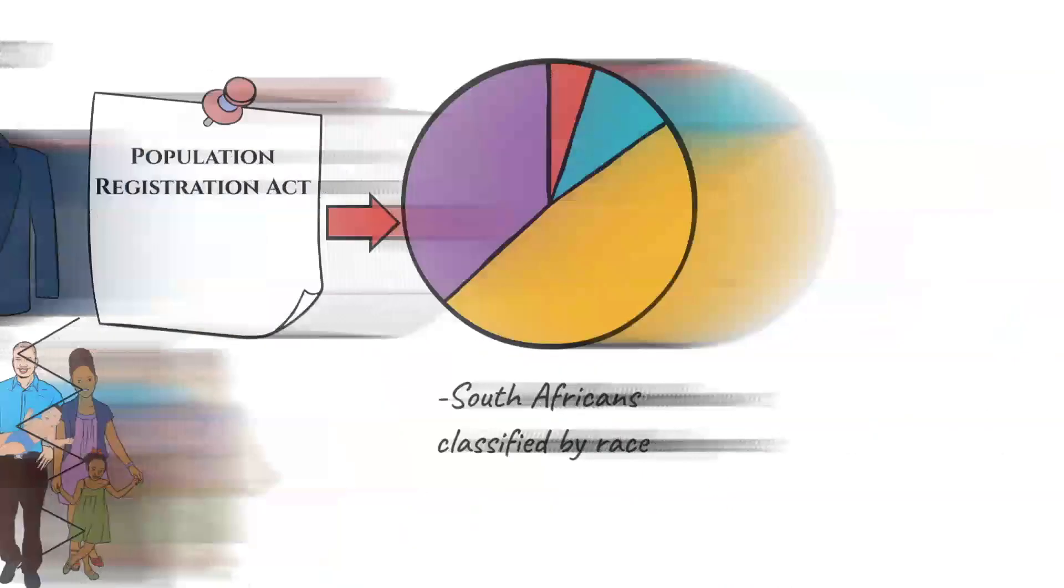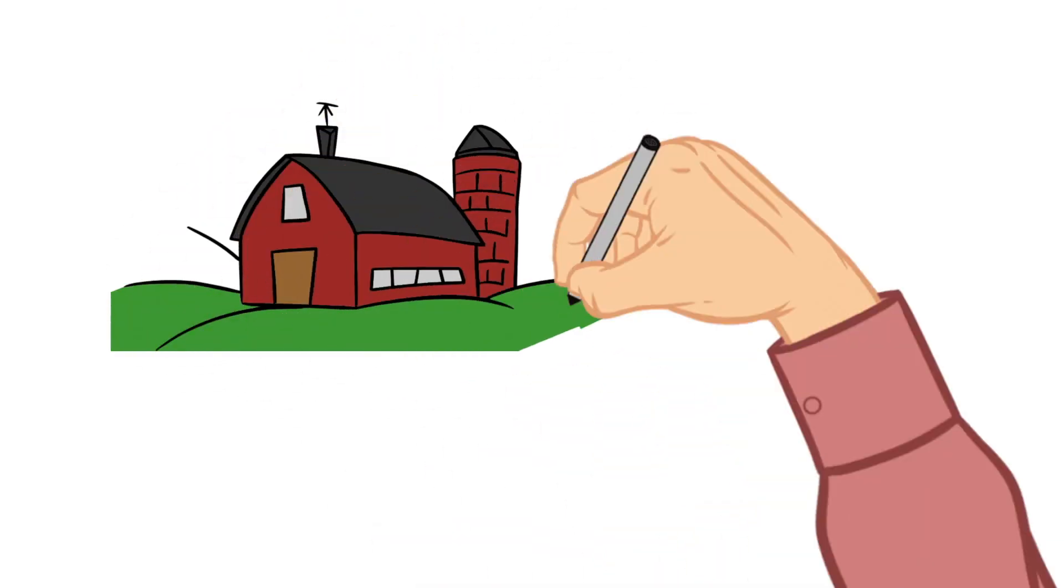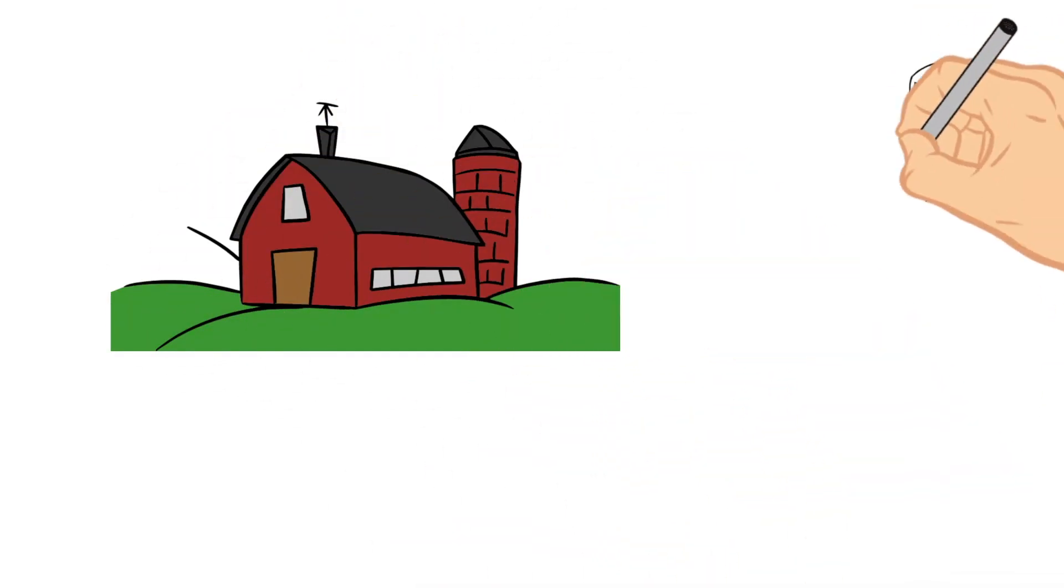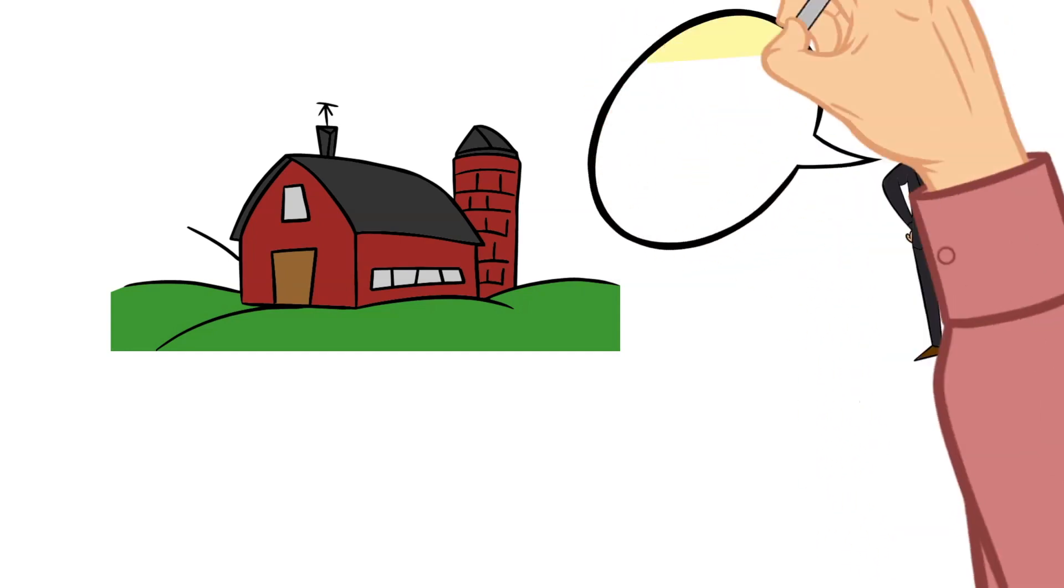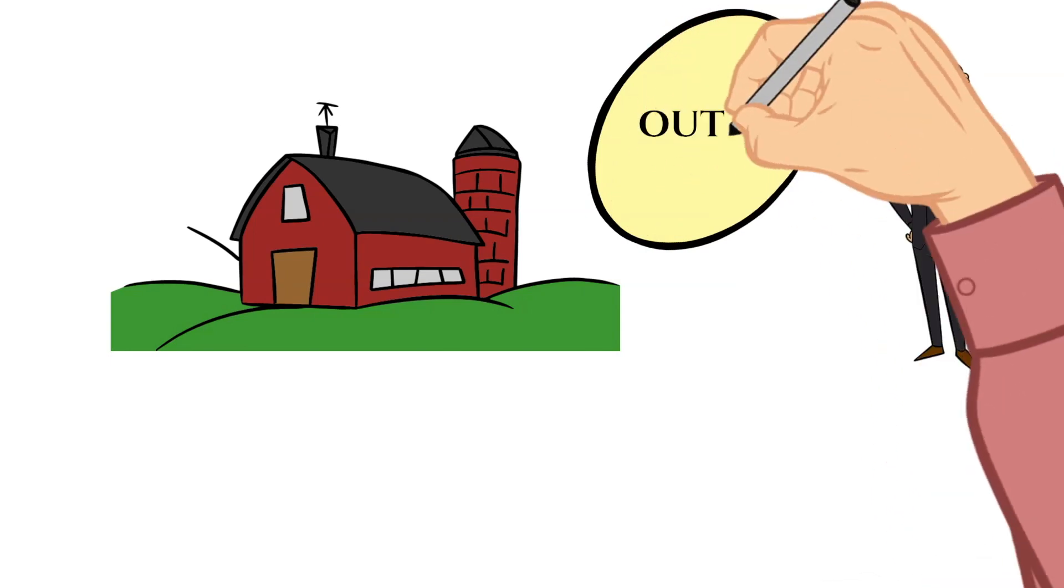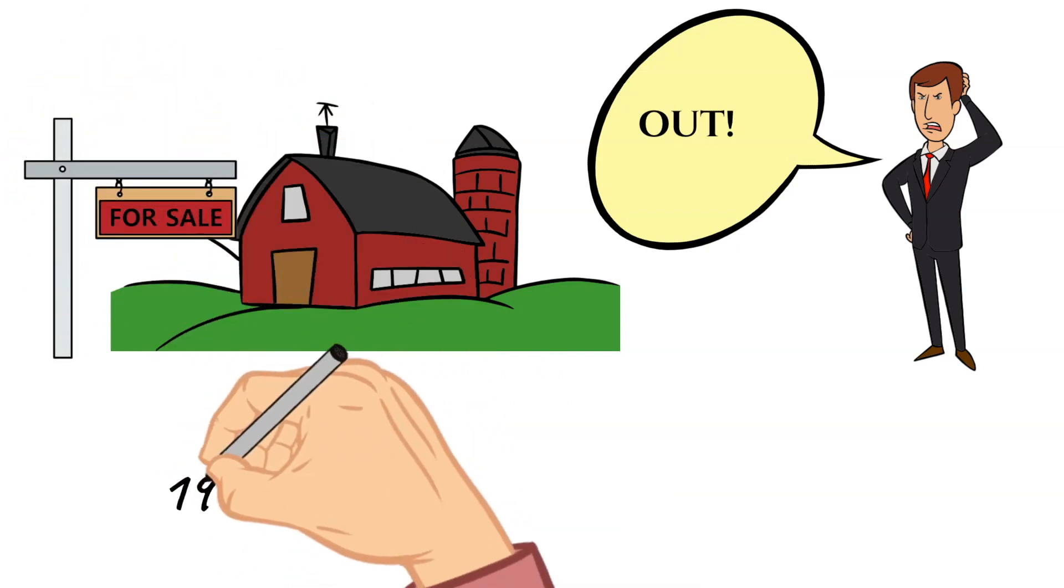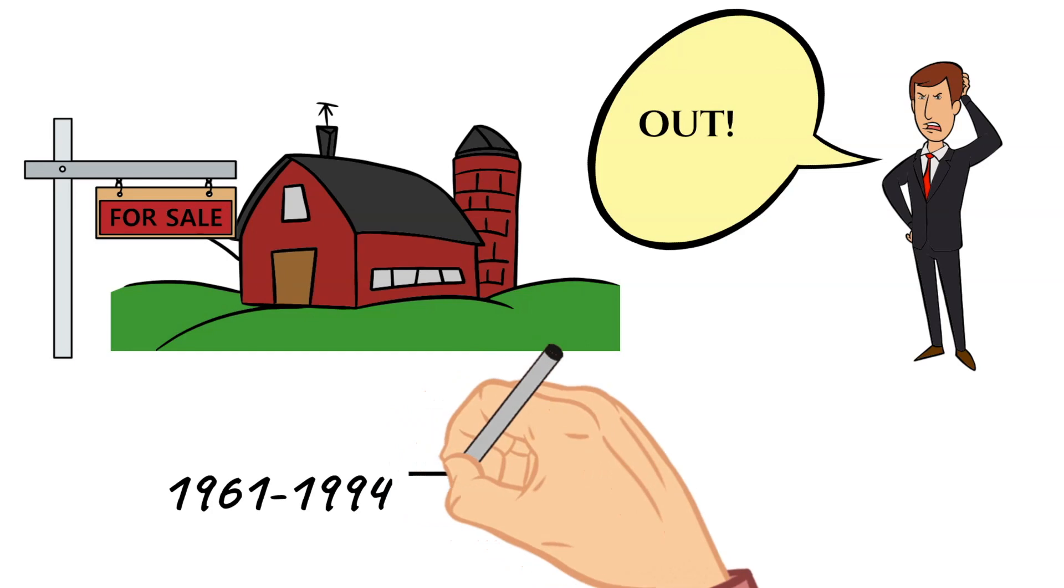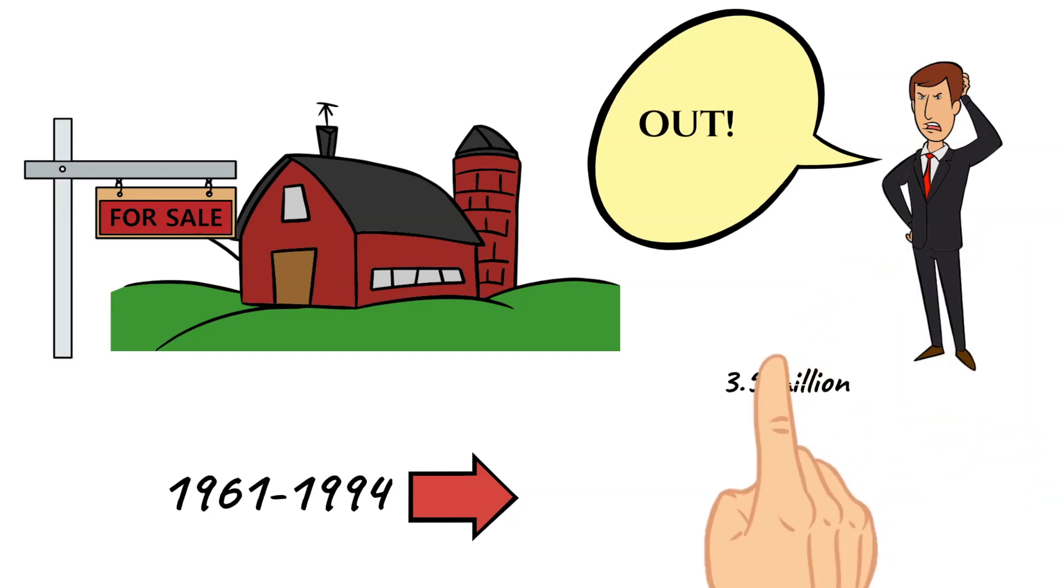In one of the most devastating aspects of apartheid, the government forcibly removed black South Africans from rural areas designated as a white area to different places and sold their land at low prices to white farmers. From 1961 to 1994, more than 3.5 million people were forcibly removed from their homes and brought elsewhere.